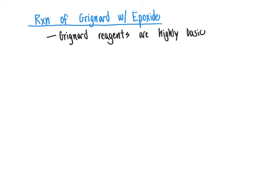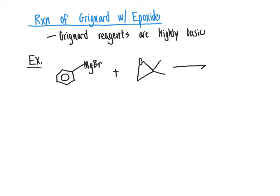This is the case because the Grignard reagent can act as a proton acceptor — meaning it's a base — in addition to acting as a source of electrons to bond to a carbon, which makes the Grignard act as a nucleophile by definition. Let's take a look at an example where a Grignard reagent reacts with an epoxide. We'll use phenyl magnesium bromide reacting with our epoxide, and we'll walk through the mechanism as well as predict the final organic product.